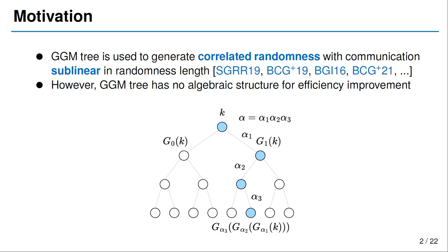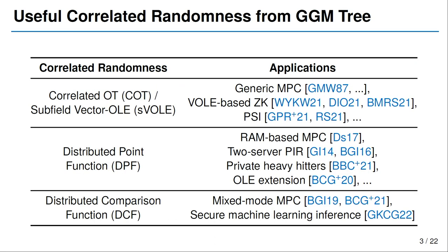The GGM tree has been used to generate correlated randomness with sublinear communication. However, GGM tree has no algebraic structure, so there's no opportunity to optimize the efficiency of previous protocols. The GGM tree is stretched from a root K using a length-doubling PRG, using G0 and G1 for its two halves. The alpha-sleeve is defined as recursive PRG evaluation according to a bit decomposition of alpha. There are many useful correlated randomness from the GGM tree, including correlated oblivious transfer (COT), subfield vector OLE (SVOLE), distributed point function (DPF), and distributed comparison function (DCF), with many MPC applications.